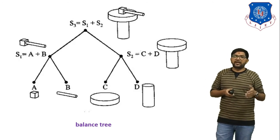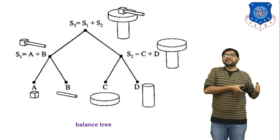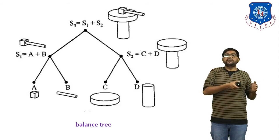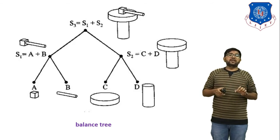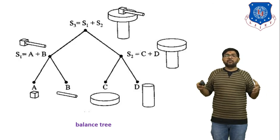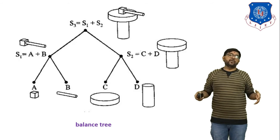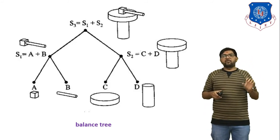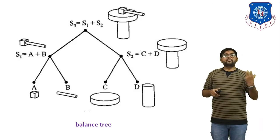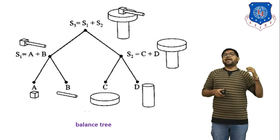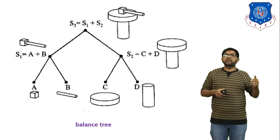In Constructive Solid Geometry, primitives like cylinder, cone, block, sphere, and wedge are already available in the software — we just give input values to generate a 3D object. In CSG, we generate a tree — balanced or unbalanced — to combine multiple objects. For combining or subtracting, we use Boolean operations: union to combine two bodies, intersection to find the common portion of two bodies, and difference to subtract one body from another.